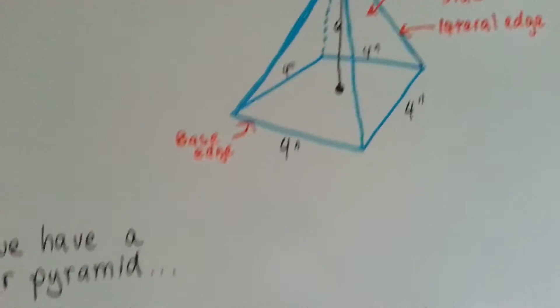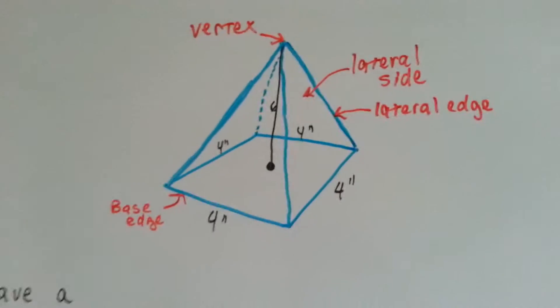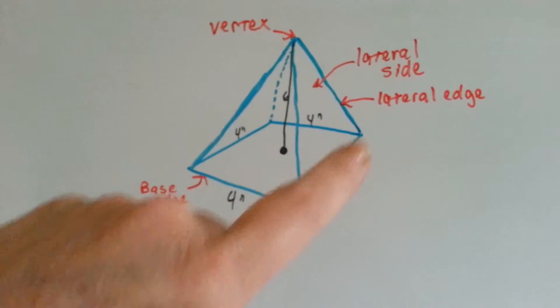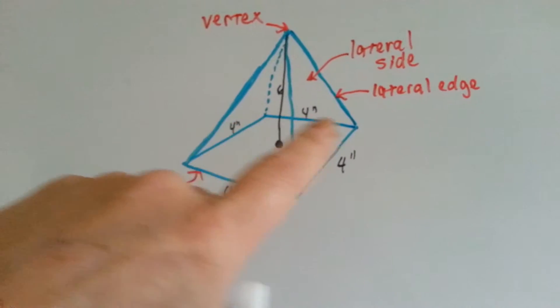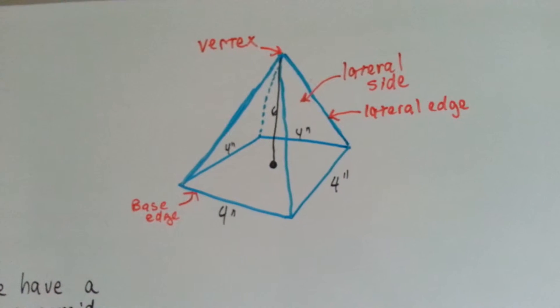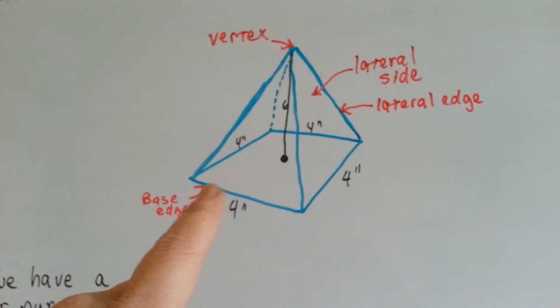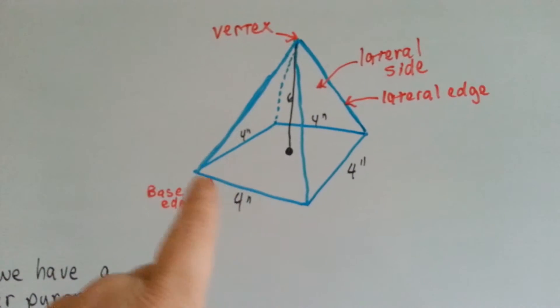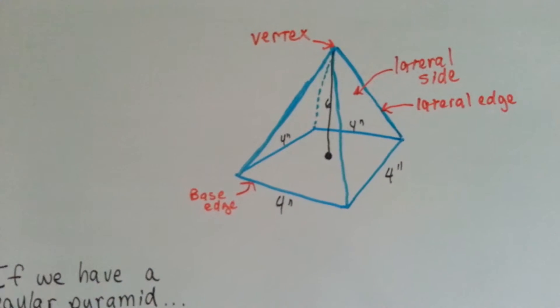I've got this pyramid right here. It's got a height of 6, and each of the base edges is 4 inches. Now, we could say centimeters. If you want to say centimeters, we can. It doesn't matter. It's just a unit of measure. I'm using inches, because I'm in America.